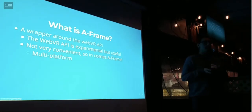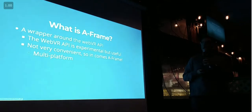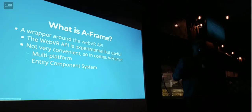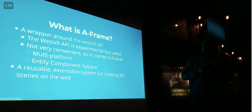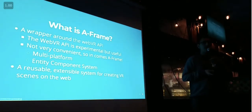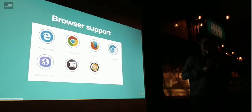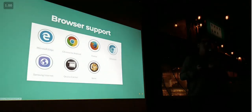A-Frame also gives us multi-platform capability. If you send someone a link to an A-Frame scene, they'll be able to use it on their phone using the gyroscope, on their desktop by walking around using the keyboard and looking around with the mouse. There's also a really extensible entity component system. The most accepted definition for A-Frame is that it's a reusable, extensible system for creating VR scenes on the web. Browser support is fully implemented in Microsoft Edge and Firefox, and will hopefully come to the rest of Chrome soon. Right now it's on Chrome for Android because of Daydream.